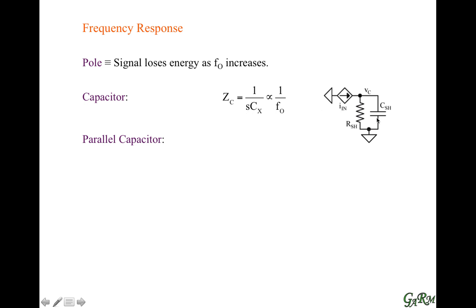In the case of a parallel capacitor — a capacitor that is in parallel with a resistor with an incoming current — at low frequencies, the capacitor impedes current the greatest. So the impedance through the capacitor is much greater than the resistor, the current goes entirely through the resistor, and the capacitor is like it's not even there. At low frequency, this RC network just looks like a resistor, and the resistor is the one that dominates.